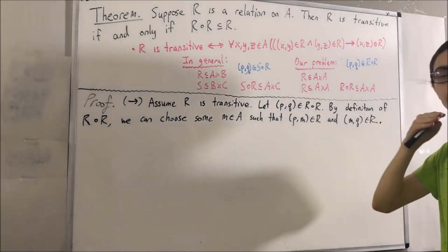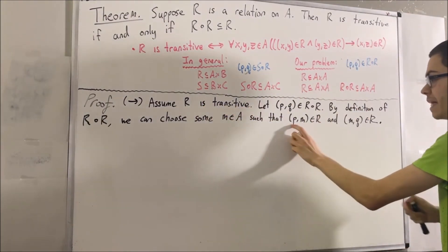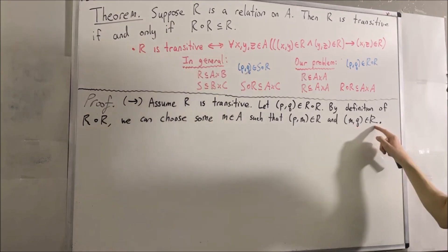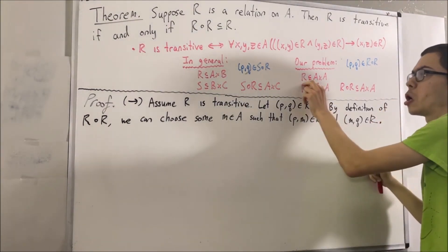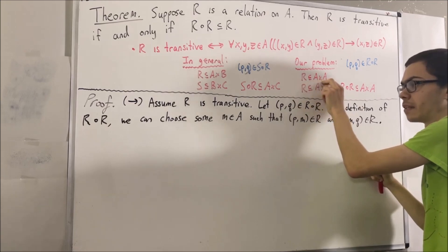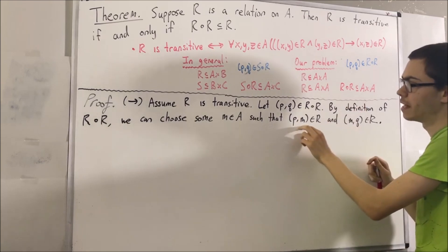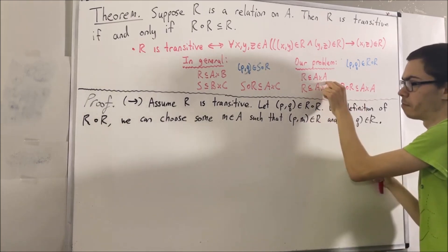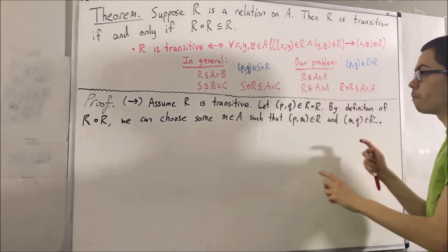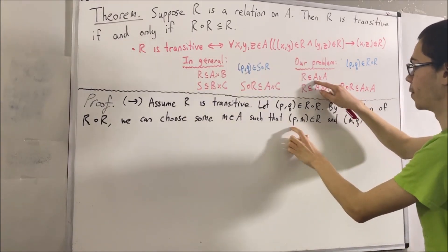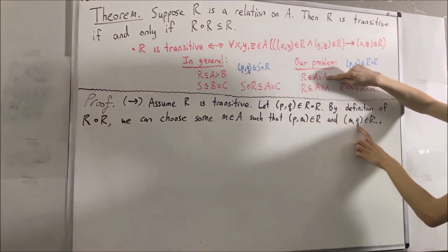Now we're going to use the fact that R is transitive to deduce that (P, Q) is an element of R. To see why, first note that R is a subset of A times A. So because (P, M) is an element of R, that means (P, M) is also an element of A times A. Similarly, (M, Q) is an element of A times A. Therefore, we can say that P, M, and Q are all elements of A.